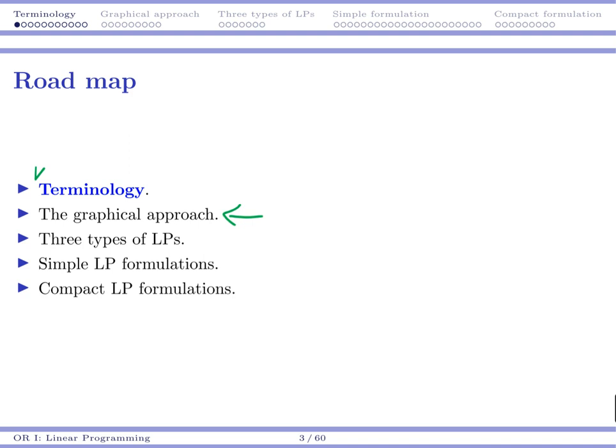We will also talk about graphically how we may understand the way to solve a linear program, how to distinguish different types of linear programs—basic situation, infeasible, unbounded. We have different types of linear programs. We will focus a lot on how to formulate linear programs. In some simple situations, or when you have a complicated problem, how may we write the so-called compact formulation? That's the plan for today.